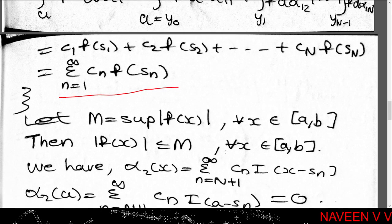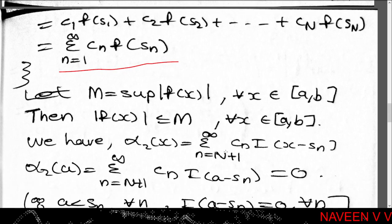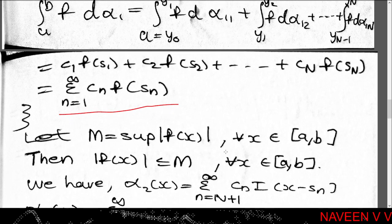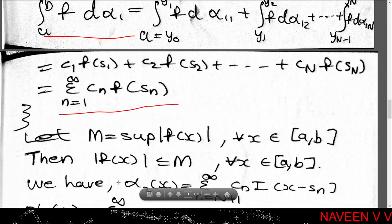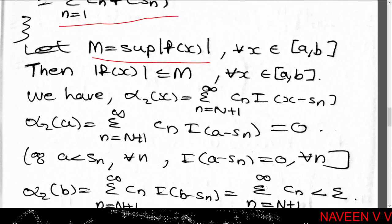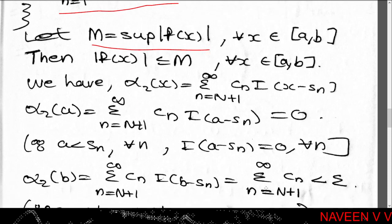Now let M = sup{ |f(x)| : x ∈ [a,b] }. Since f is continuous on the closed interval [a,b], we choose the supremum M. Then |f(x)| ≤ M for all x in [a,b].